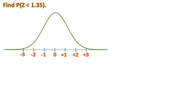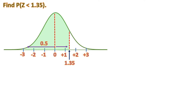So we're going to find z less than 1.35. We locate 1.35 on the curve — it's around here — and mark a line. Since it says less than, we shade the area to the left of 1.35. We split it: we know the left half up to 0 is 0.5, and we need to find the area between 0 and 1.35 using the z-table.